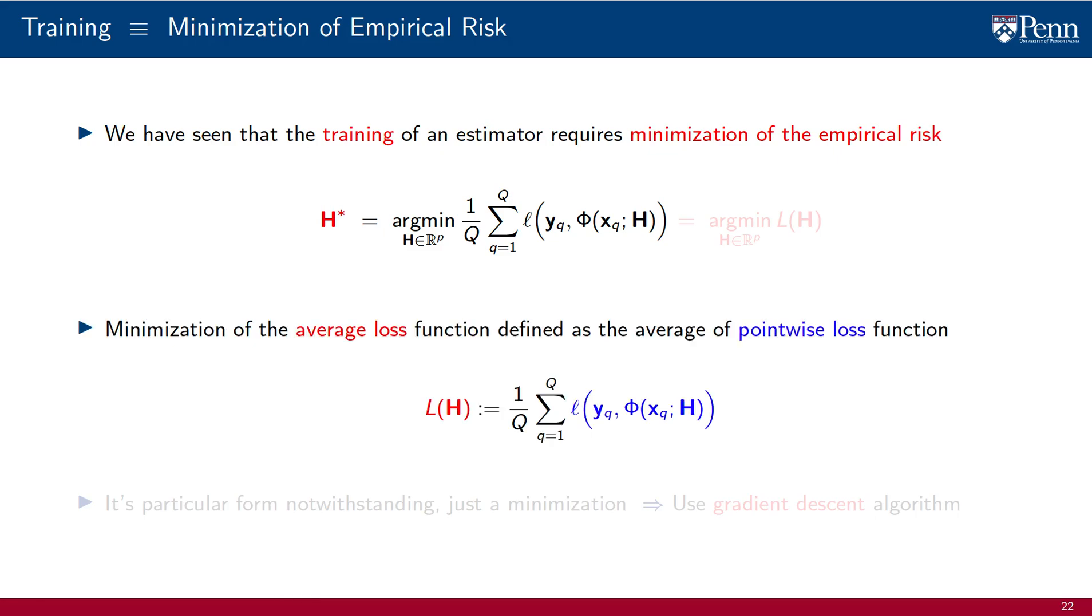In our discussions here, it is convenient to define the average loss function capital L of h as the average of the pointwise loss functions. With this definition, the training problem is just the minimization of the loss function L of h.